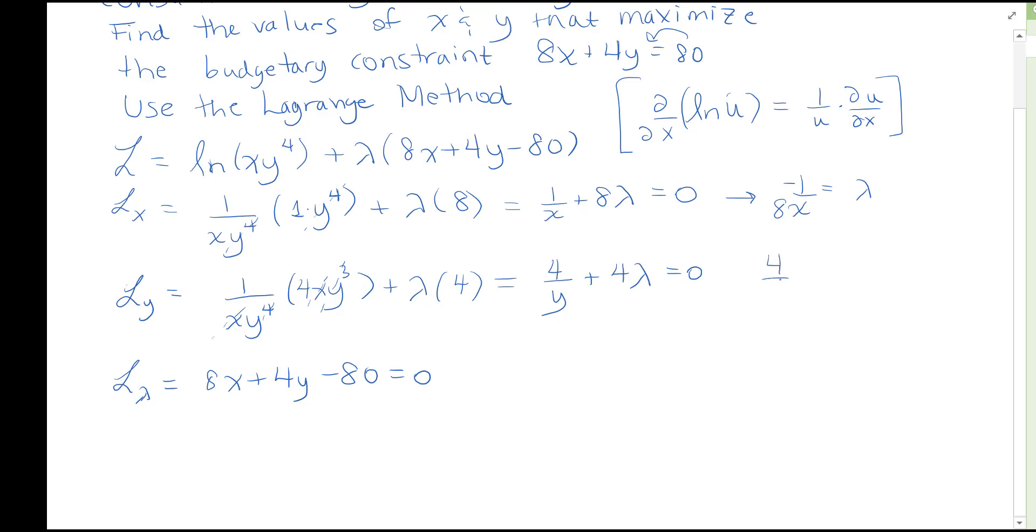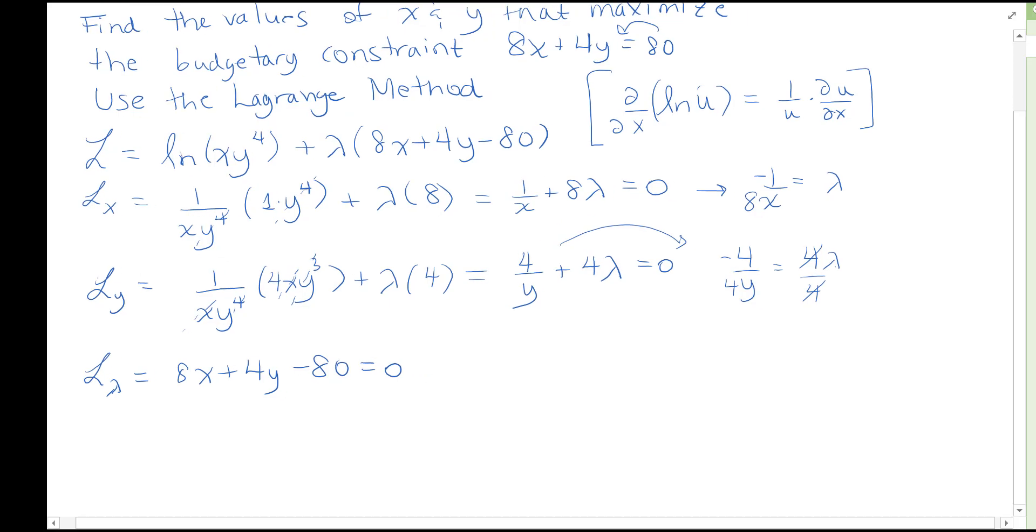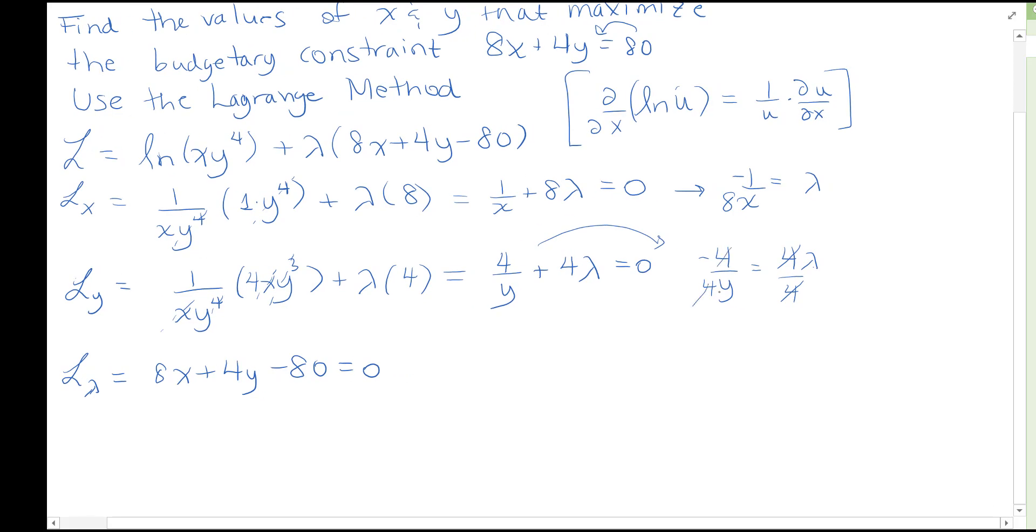And 4 over y equals 4 lambda, and add in a negative here somewhere because I'm bumping one of these to the other side. Let's make that negative and then divide both sides by 4. And that gets rid of the 4 on the right and all the 4s end up going away. And negative 1 over y equals lambda for the second equation.